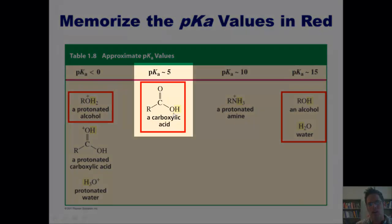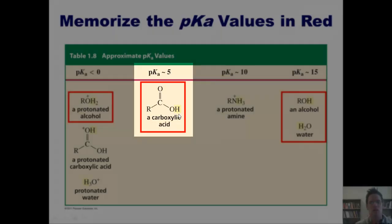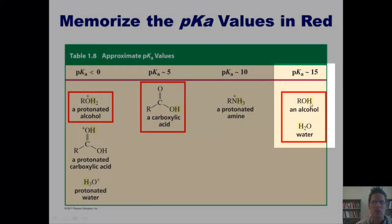Contrastingly, a hydrogen that's stuck to this type of oxygen, this is an oxygen that's immediately stuck to a carbon that's double bonded to an oxygen, this is a carboxylic acid hydrogen, has a pKa of around 5. And if I'm just talking about a hydrogen that's stuck to an oxygen that's just stuck to a boring carbon chain or an oxygen that's just stuck to two hydrogens, as in water or an alcohol, we're talking about a pKa of 15.